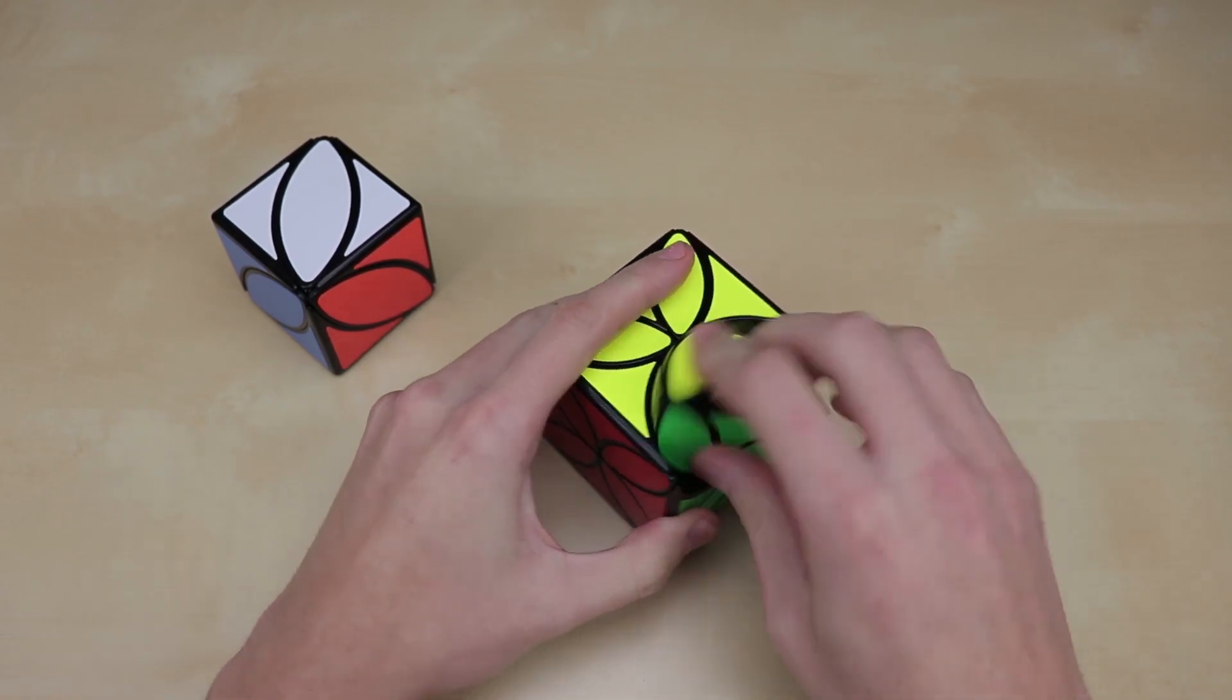But anyway, let's just go ahead and scramble it up just to see what it looks like when it is scrambled. So we can do some moves like this and just turn the same side a bunch of times. There we go. And now we can change onto a different axis, maybe. Like this one. I have a feeling this might take quite a while to scramble.